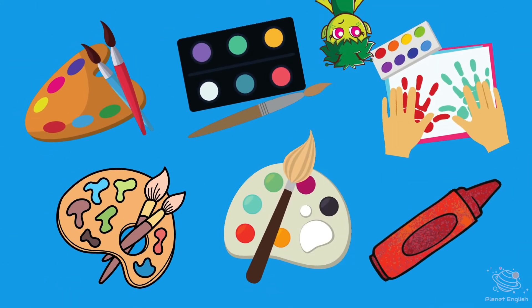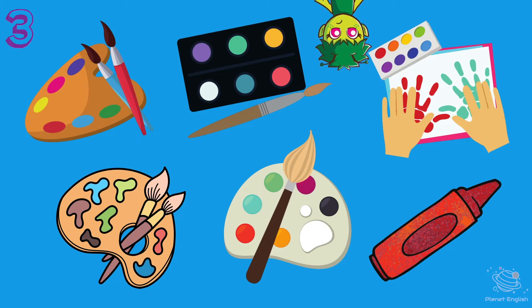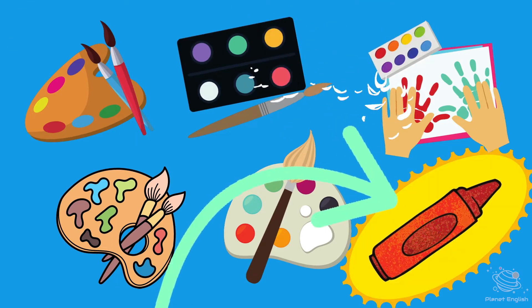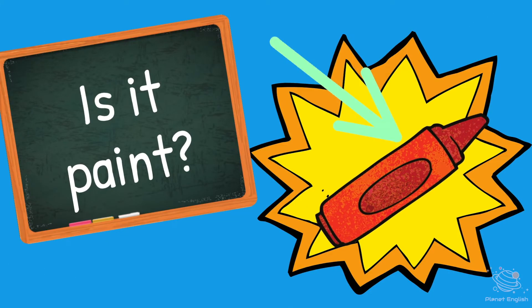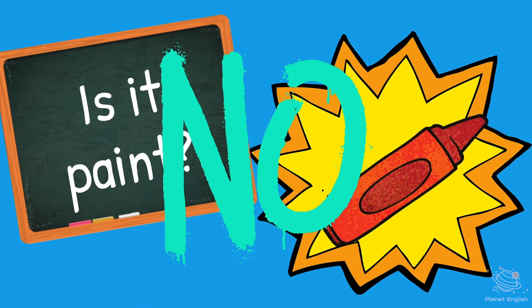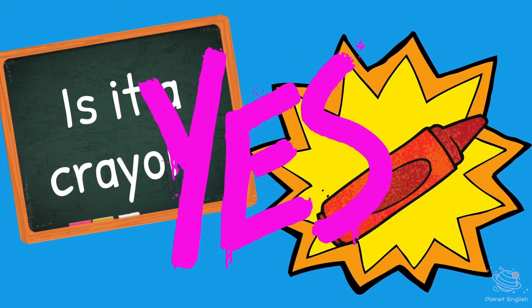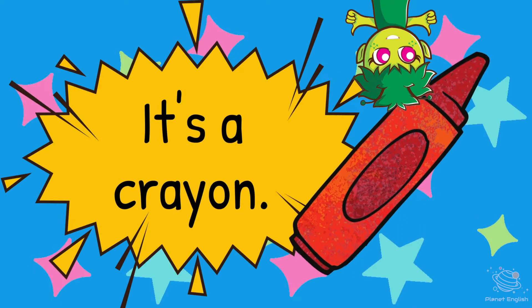Where is the odd one out? 5, 4, 3, 2, 1. Is it paint? No! Is it a crayon? Yes! It's a crayon!